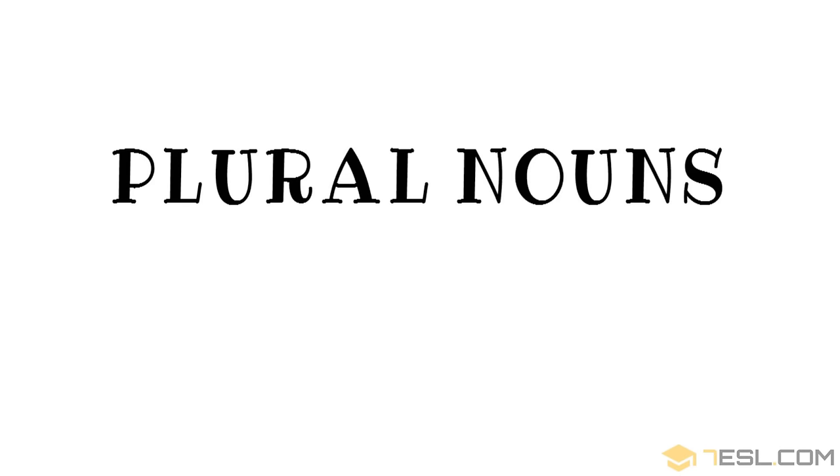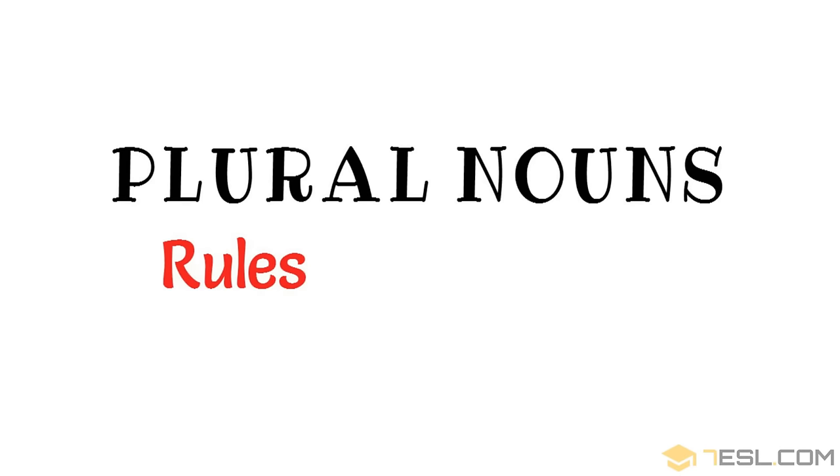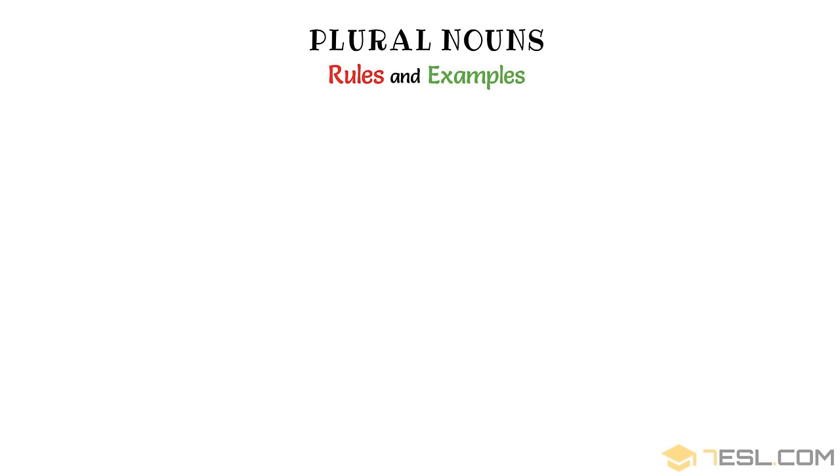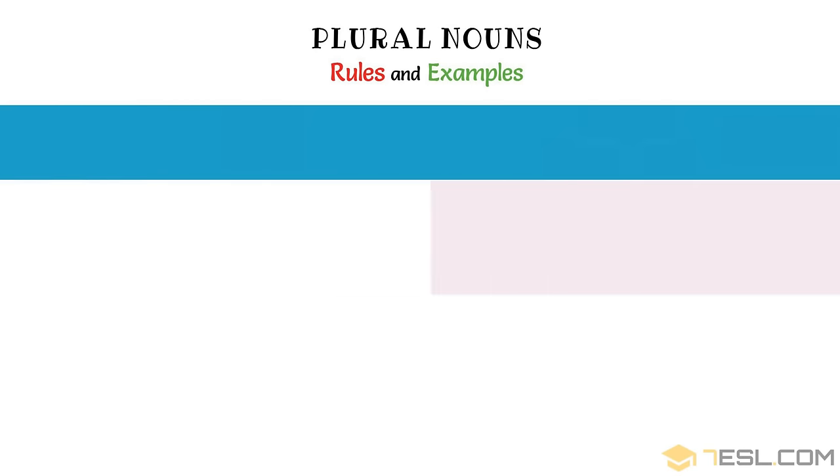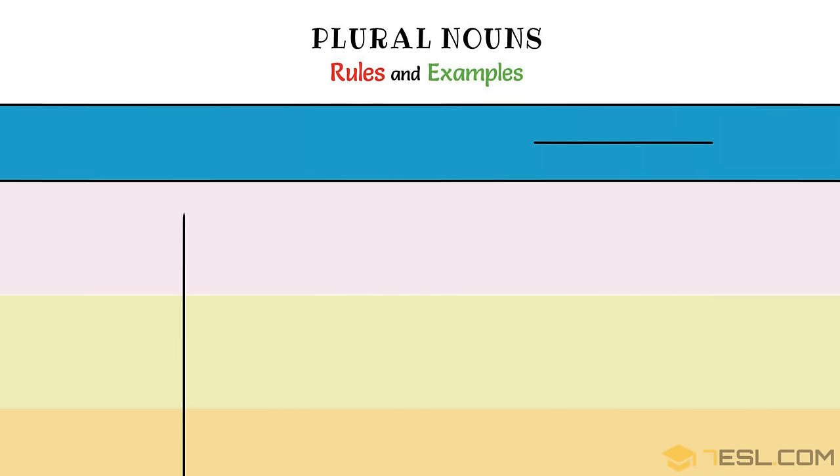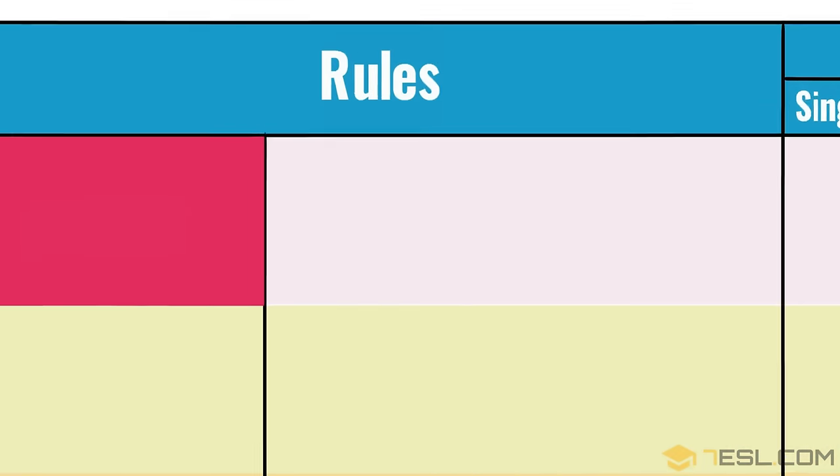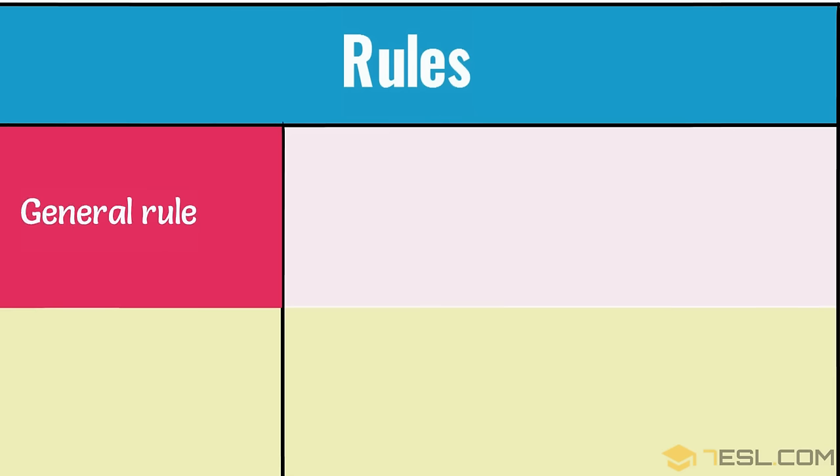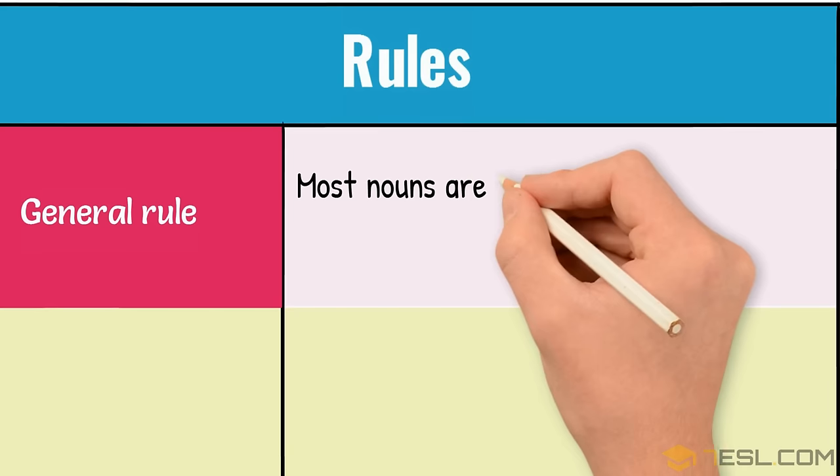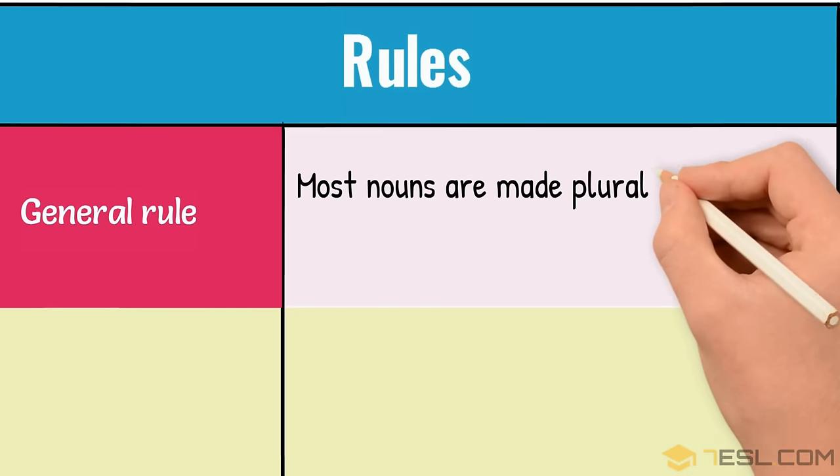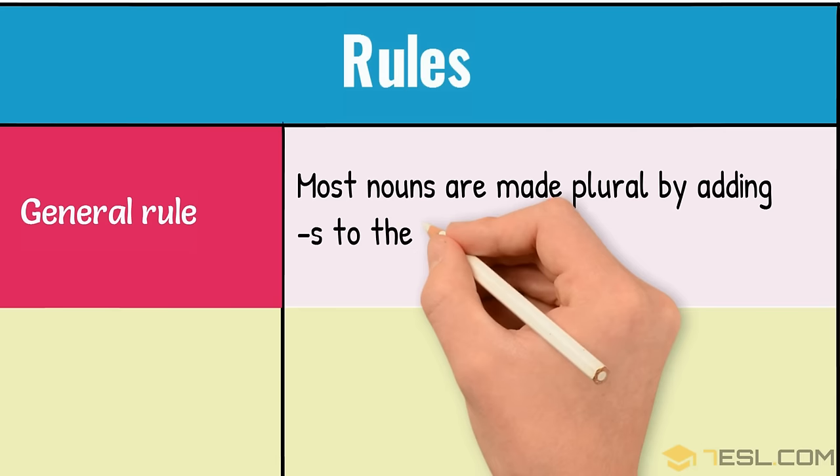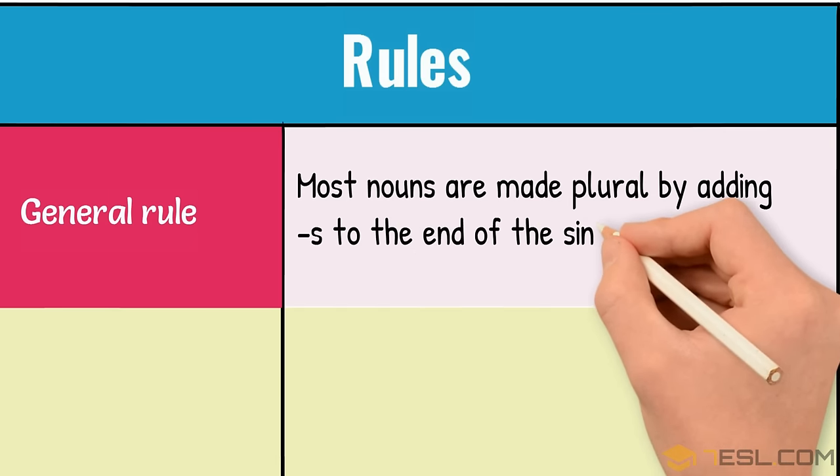Plural Nouns Rules and Examples. Rules for singular and plural exceptions. General Rule: Most nouns are made plural by adding S to the end of the singular form.